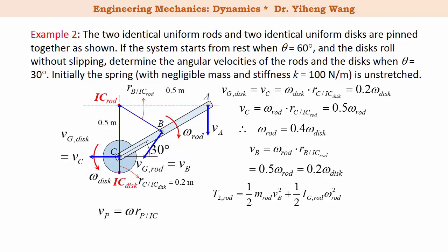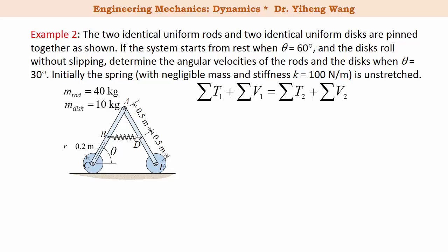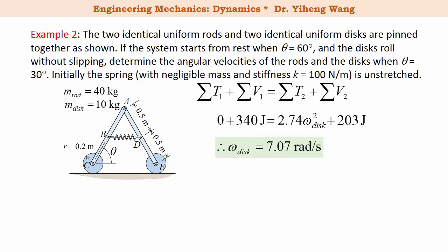Therefore, the kinetic energy of one rod can be determined as 1.07 omega_disk squared, and the kinetic energy of one disk can also be determined. The total final kinetic energy of the system is then an expression with only one unknown, omega_disk. Now we have analyzed every term in the conservation of energy equation: initial total kinetic energy is 0, initial total potential energy is 340 joules, final total kinetic energy as an expression of omega_disk, and final total potential energy is 203 joules. With one equation and one unknown we can solve for omega_disk, and since omega_rod equals 0.4 omega_disk, we can determine the angular velocity of the rod as well.